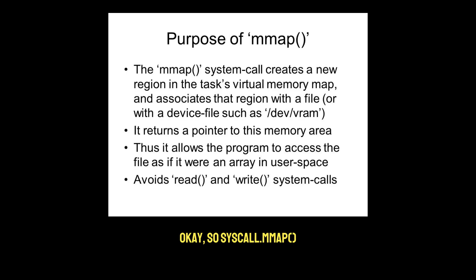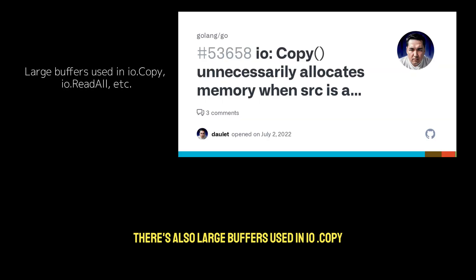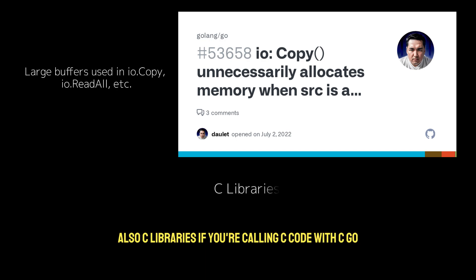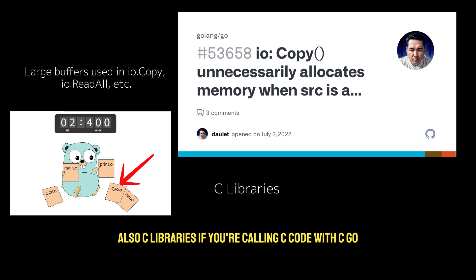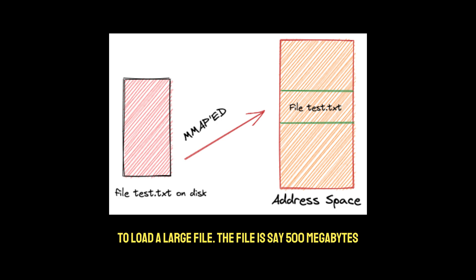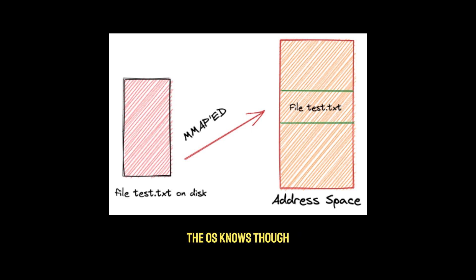Beyond syscall.mmap, there are other sources of native memory. Large buffers used in io.Copy can grow out of control when streaming large files. Also, if you're calling C code with CGo, it might allocate memory the garbage collector can't see. Here's an example: a Go app calls syscall.mmap to load a large file — say, 500 megabytes. Go's GC does not know it exists, but the OS does, and when your app crosses its memory limit, it gets killed.